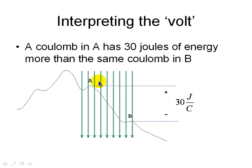So, a Coulomb in A has 30 joules of energy more than the same Coulomb in B. If we have a Coulomb in B and we want to move it uphill, you and I will have to pay the price and pay nature 30 joules of energy.